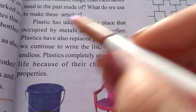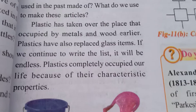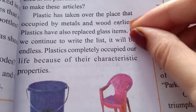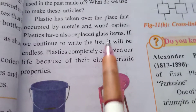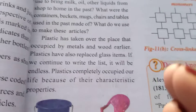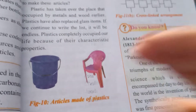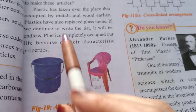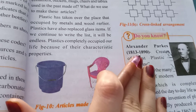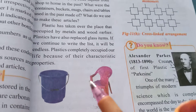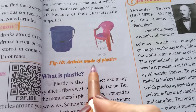Plastics have also replaced glass items. Today we use plastic glasses instead of glass ones at home. If we continue to write the list, it will be endless because most articles we use in our day-to-day life are made of plastic. Plastic has completely occupied our life because of its characteristic properties. Baskets and chairs are also made of plastics — most articles around us are made of plastics.